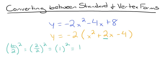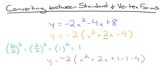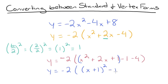So now we're going to add and subtract this value after the x term. We'll have y equals negative 2 times x squared plus 2x plus 1 minus 1 minus 4. Then we're going to factor the perfect square trinomial: this gives us y equals negative 2 times x plus 1 squared, and the minus 1 minus 4 stays the same for now. Then we combine our like terms to get y equals negative 2 times x plus 1 squared minus 5.